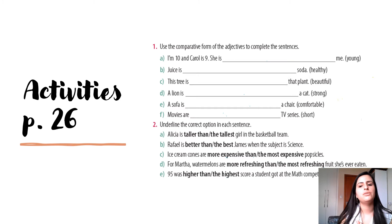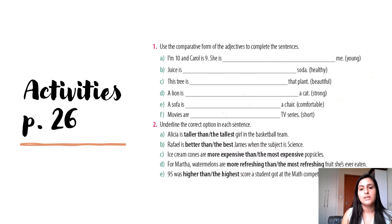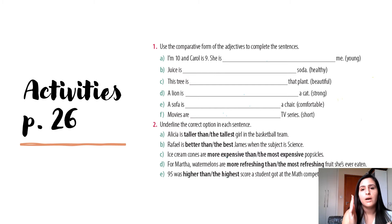So, let's do the first one as an example. I'm 10 and Carol is 9. She is younger than me. Como é um adjetivo curto, eu adiciono o sufixo -ER à palavra e ela se torna 'younger'. Para terminar de completar, eu utilizo a palavra 'than'. She is younger than me. Now try to complete the others. Se for um adjetivo de uma sílaba, eu adiciono -ER. Se ele terminar em -Y, eu corto o Y e adiciono -IER. Se for um adjetivo longo, eu coloco MORE na frente do adjetivo e completo com THAN.